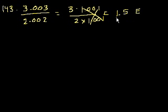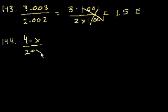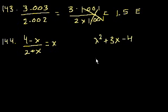And that's choice E. Problem 144. If 4 minus x over 2 plus x is equal to x, what is the value of x squared plus 3x minus 4?